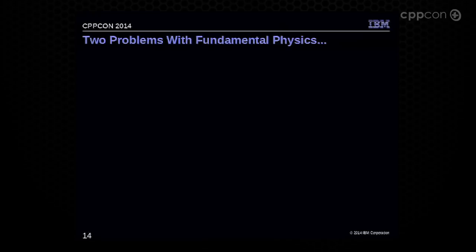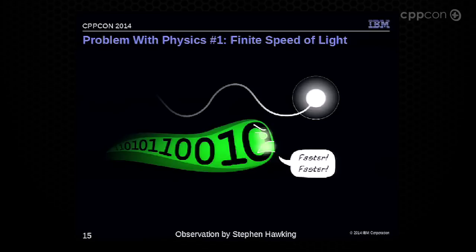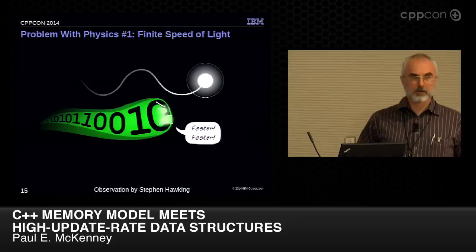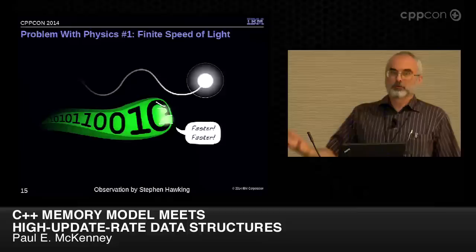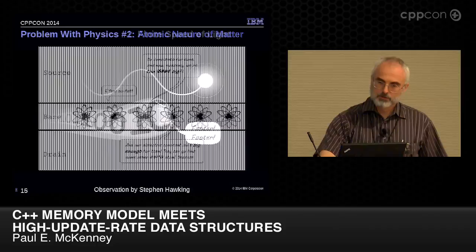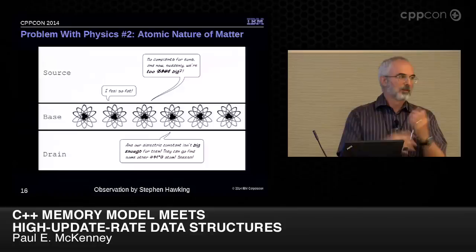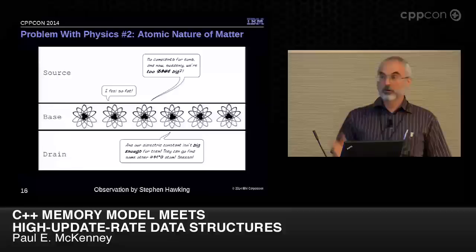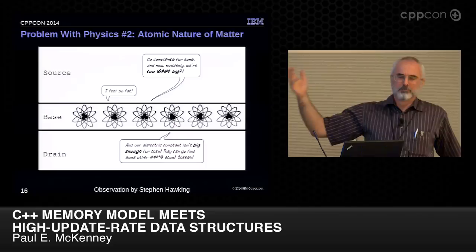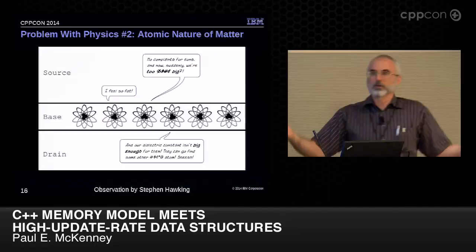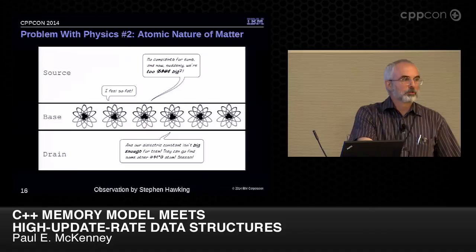We have two fundamental problems: the speed of light is finite, and we can't make data go any faster. Another problem is the atomic nature of matter — the only way we know to do computation is to use electrons, atoms, and photons, and they're only so small. The theoretical limits on information are much smaller, as Chandler pointed out, but we don't know how to get there. Stephen Hawking is, as far as I know, the first to call both of these out. If you solve these two problems, there's a Nobel Prize waiting for you.